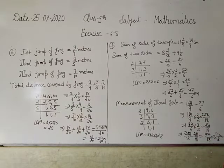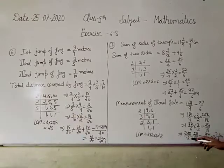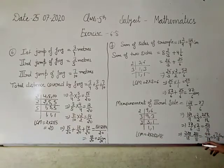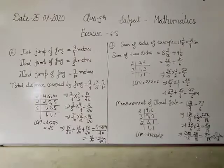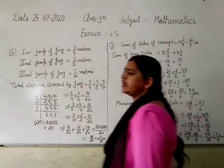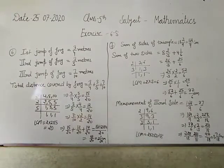To make like fractions, 164 by 9 multiply by 2 gives 328 by 18. And 77 by 6 into 3 gives 231 by 18. Now subtract: 328 by 18 minus 231 by 18. Answer is 97 by 18, which equals 5 and 7 by 18 cm.